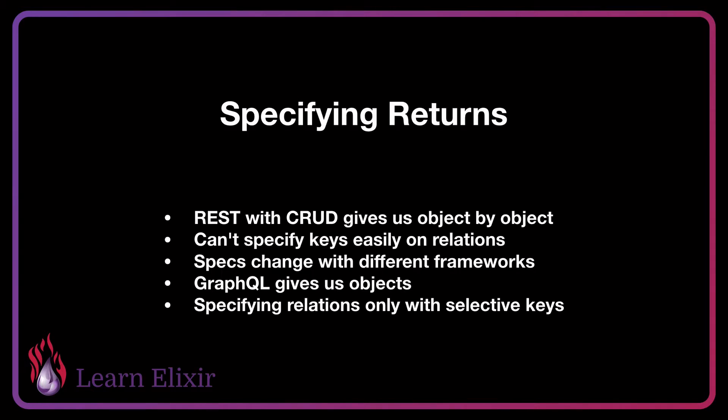One of the benefits of GraphQL is that we can easily specify the returns of what we want from our API. With REST and CRUD, it gives us an object by object, and this doesn't necessarily let us specify which fields we want, unless we use something like the fields param we saw in the previous video. Our fields param must be manually implemented, which means it's going to change between different specifications of REST.